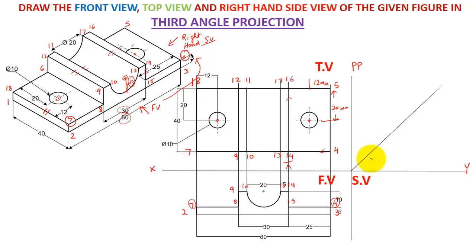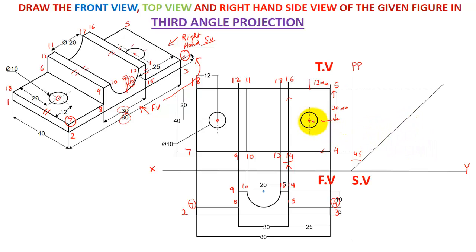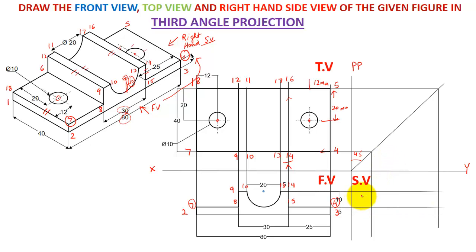For the side view, I make a 45-degree line. I take projections onto this 45-degree line from the top view, carry them downwards, and also take projections from the front view. Wherever these projection lines from the top view and front view intersect, that gives me the outline of my side view.